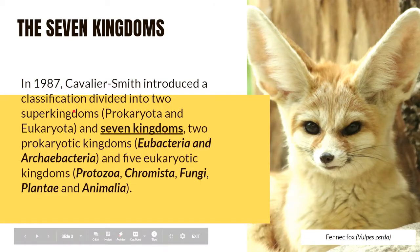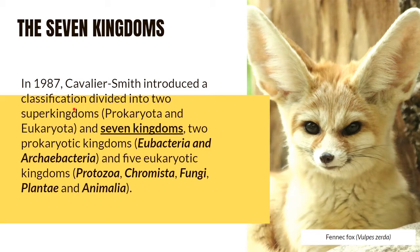In 1987, noted zoologist and professor of evolutionary biology at University of Oxford, Cavalier-Smith, introduced a classification system which divided all living things into two super kingdoms, prokaryota and eukaryota, and Seven Kingdoms.